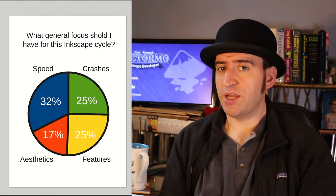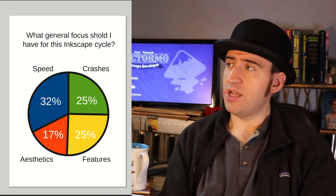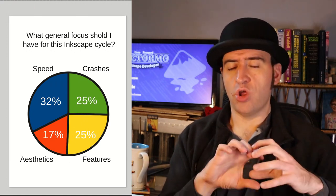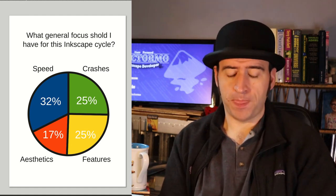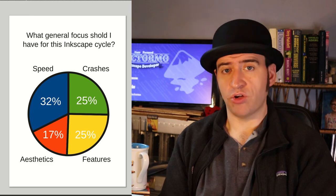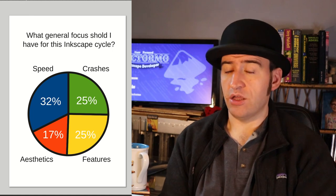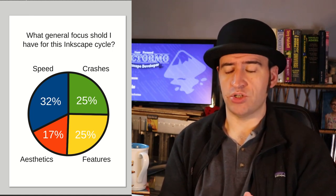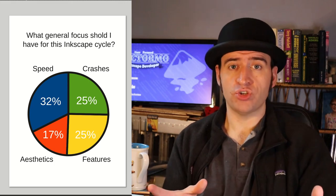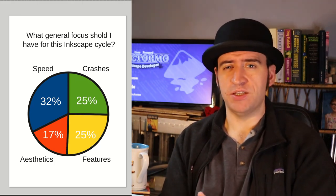To kick off this new cycle, I decided to send a poll — in fact, I sent two polls. I sent a public poll asking the general public what kind of work I should be doing for the next cycle. I asked them essentially what area should I be focusing on: should I be fixing crashes, working on features, working on aesthetics, or looking into speed improvements? The results were quite interesting because it's mostly a wash — they're mostly the same, except speed comes out ahead.